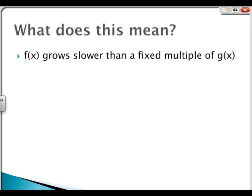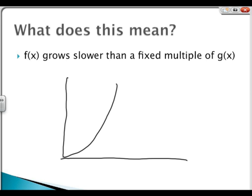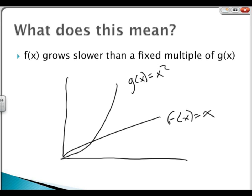We can represent this pretty easily on a graph. Let's say that you have function g of x equals x squared and the function f of x equals x.